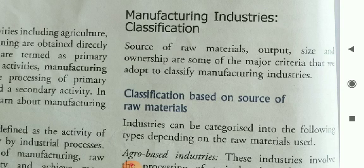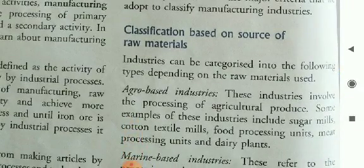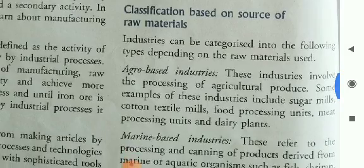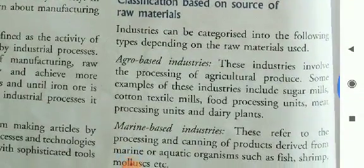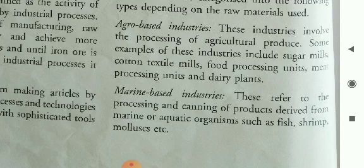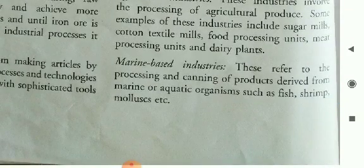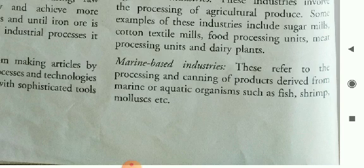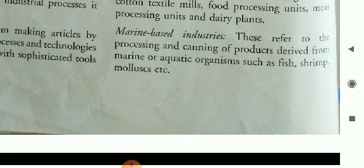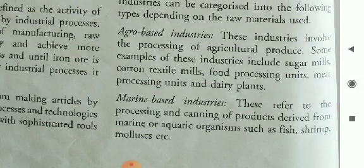Classification based on source of raw materials: industries can be categorized into the following types depending on the raw materials used. First is agro-based industries. These industries involve the processing of agricultural produce. Some examples include sugar mills, cotton textile mills, food processing units, meat processing units, and dairy plants.